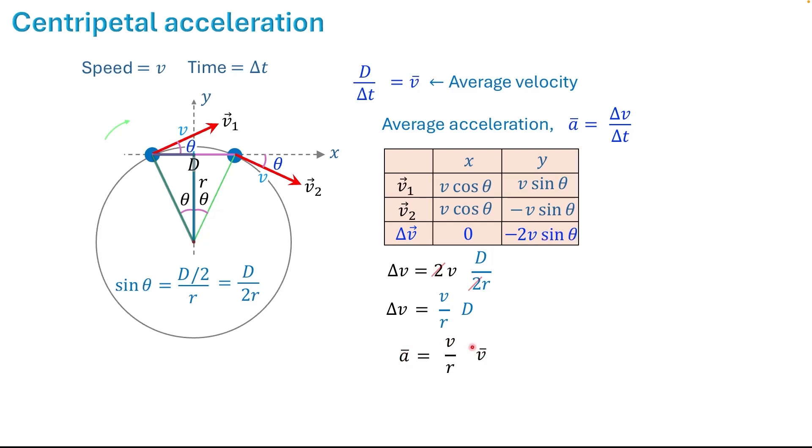This equation is valid for any time interval. But when the time interval is small, that is when delta t approaches zero, the average acceleration becomes instantaneous acceleration and the average velocity becomes instantaneous velocity. So we can replace a bar with a and v bar with v, which equals v times v, or v squared, divided by r. This is the centripetal acceleration.